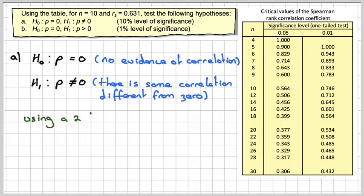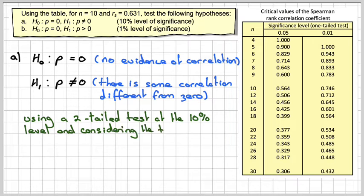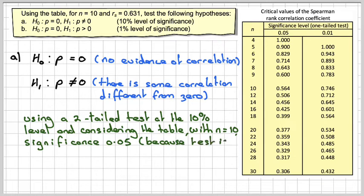Now, using the table, a two-tailed test at the 10% level, and considering the table with n equals 10 and a significance of 0.05, because the test is two-tailed and we want the upper tail just to be 5%, we reject H0 if the Spearman rank correlation, rs, is greater than this value here, which is 0.564.